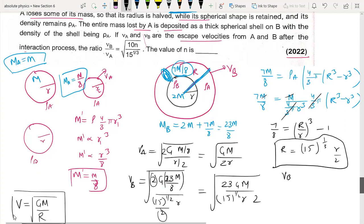VB/VA, so this is equal to √(23/15) × 2. After comparing, we get the final ratio.